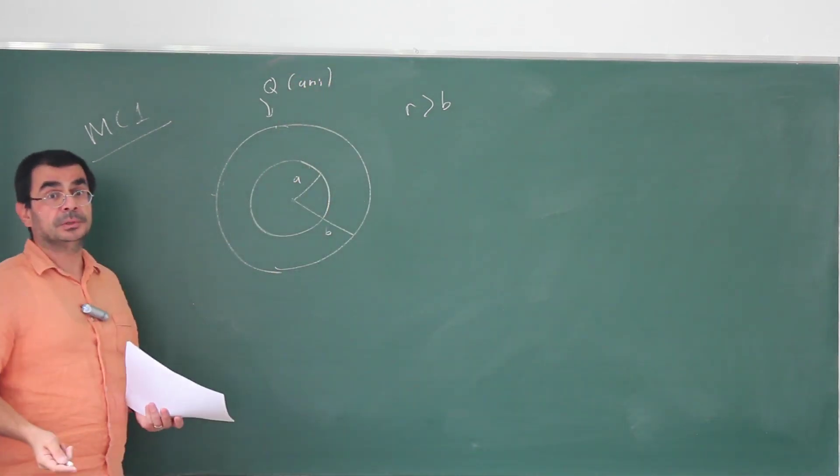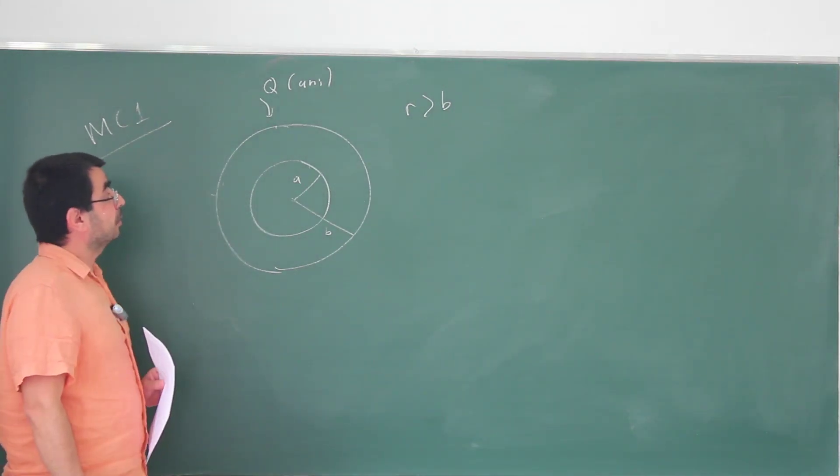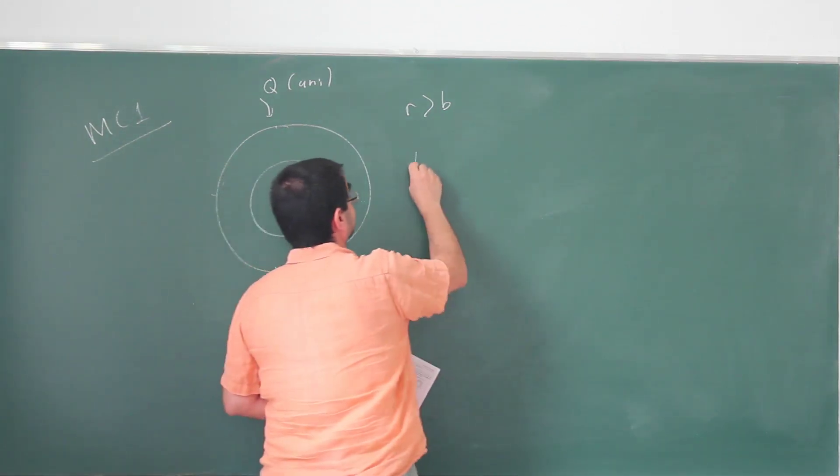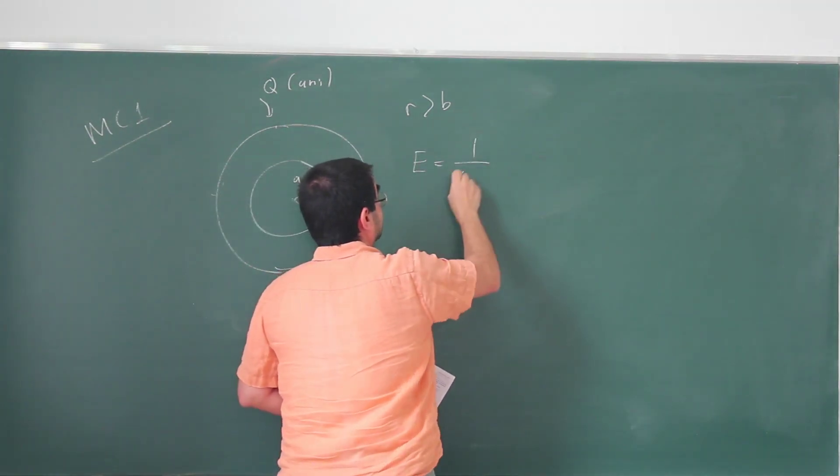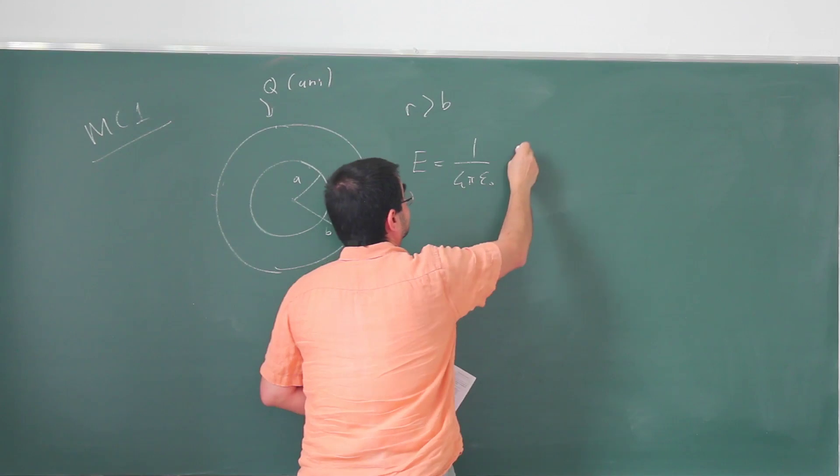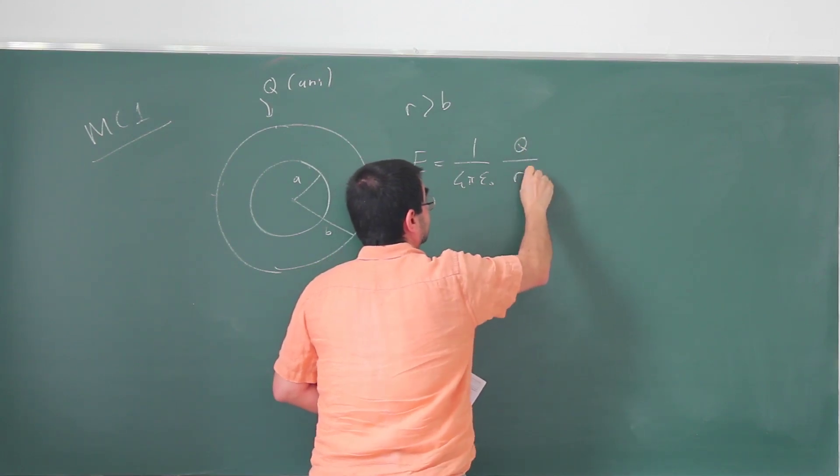Once it's uniform, then by Gauss's law, this is going to act like a point charge at its center. The electric field is just going to be 1 over 4π epsilon naught Q over R squared.